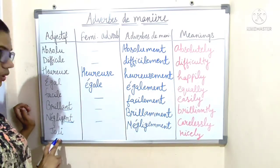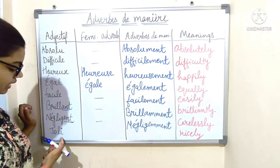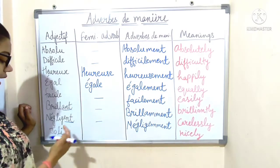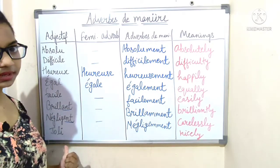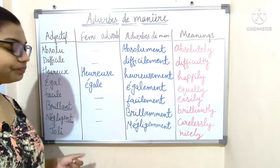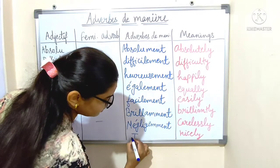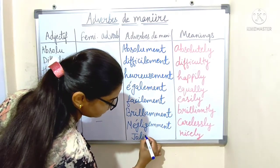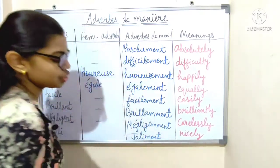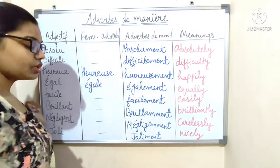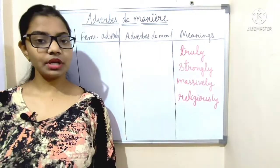Next: 'joli', which means 'nicely'. It ends with the vowel I, so we directly add '-ment': 'joliment', which means 'nicely'.